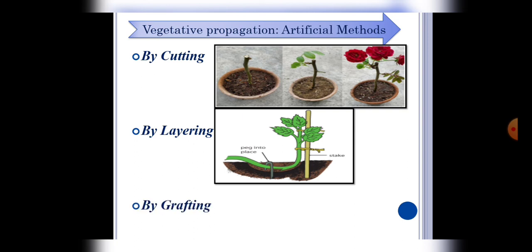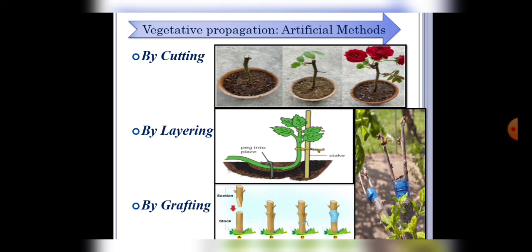Next method is grafting. Students, in this method, a desired plant's cutting, which is called scion, is joined with a rooted plant, or stock. You can see it in the picture. Stock and scion are tied with thread or tape, and the scion gets nutrients from the stock. And we can get a new variety in the plant. So this is called grafting, and by this process, we can easily grow any desired fruit and flower plant.